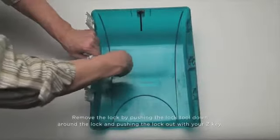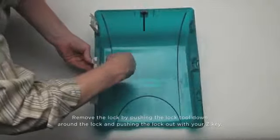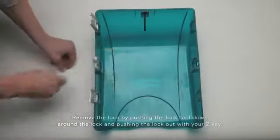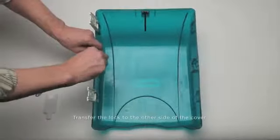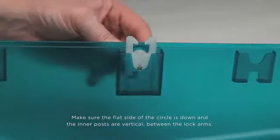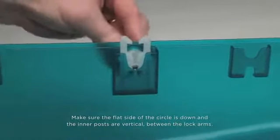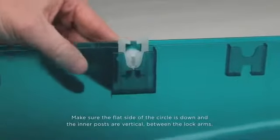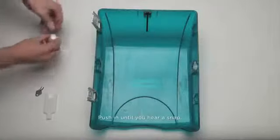Remove the lock by pushing the lock tool down around the lock and pushing the lock out with your Z key. Transfer the lock to the other side of the cover. Make sure the flat side of the circle is down and the inner posts are vertical between the lock arms. Push in until you hear a snap.